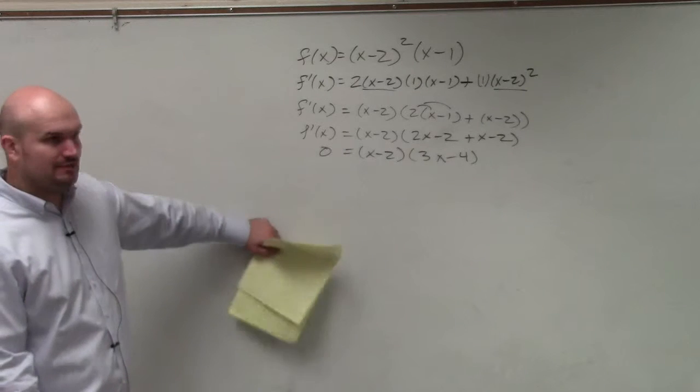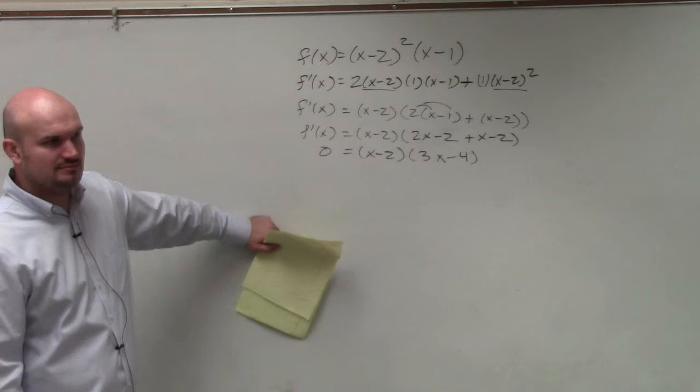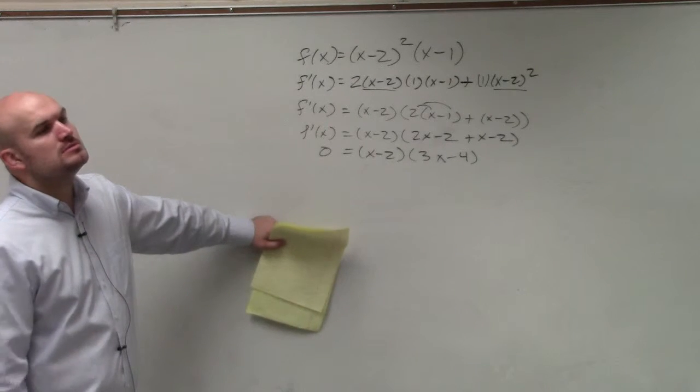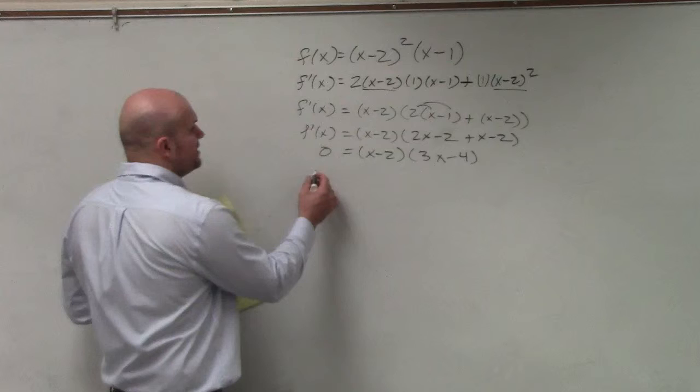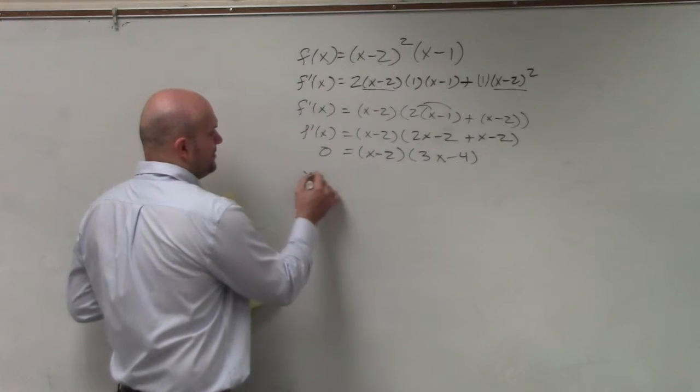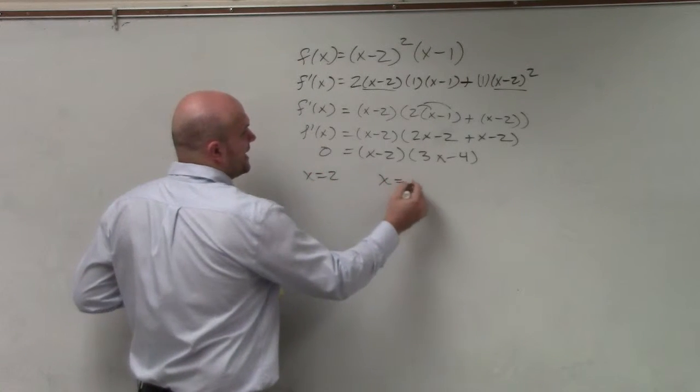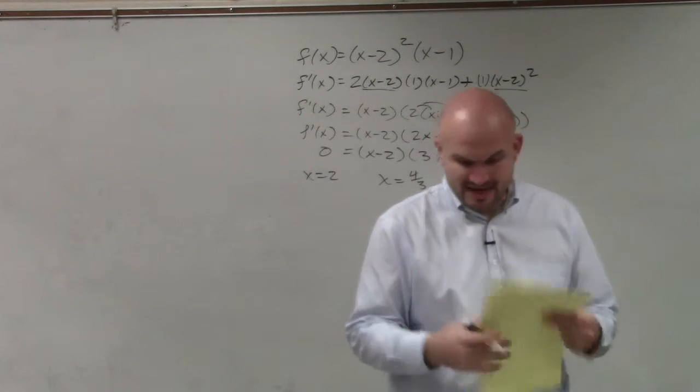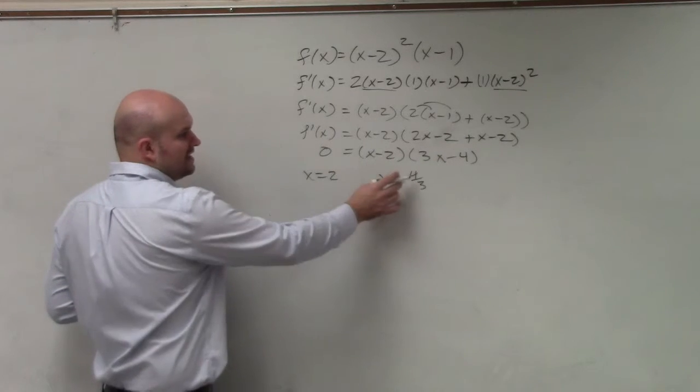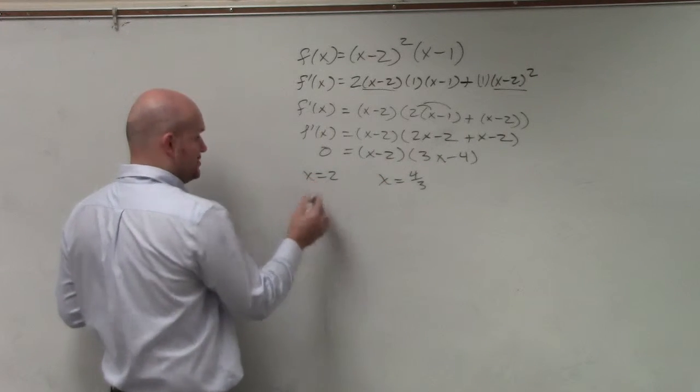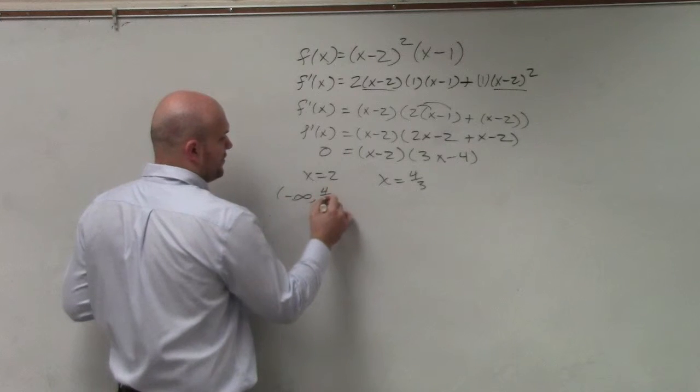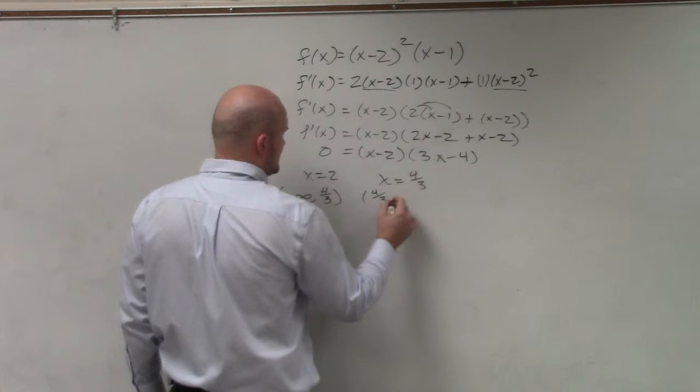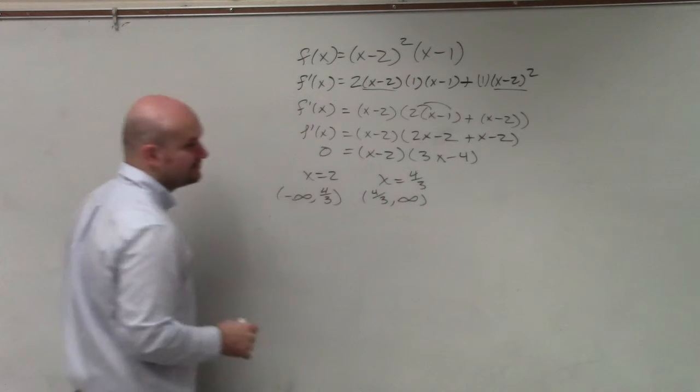OK, so now we set it equal to 0. Apply zero product property - you could say x = 2 and x = 4/3. Did I give you guys an interval on this one? I did not. So the intervals that we'll want to check - obviously 4/3 is going to be less than 2 - so I'll say from negative infinity to 4/3, and from 4/3 to infinity.